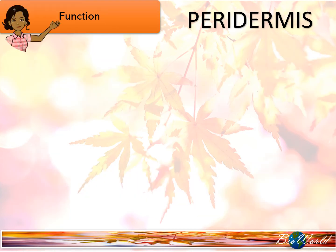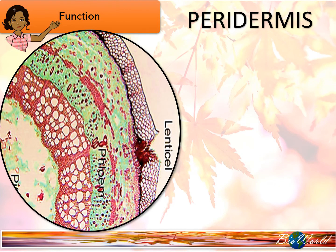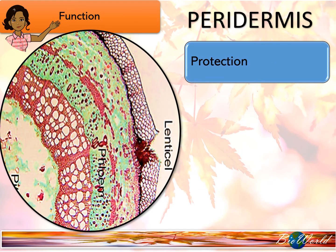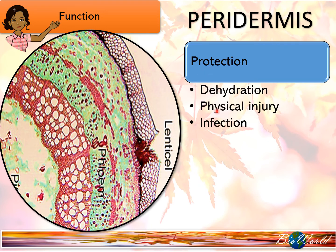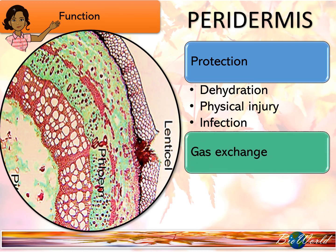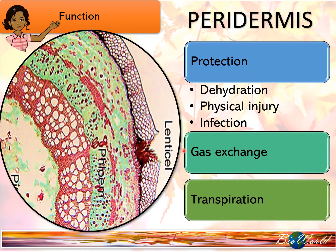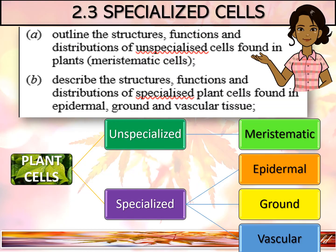Now we will look at the function of the peridermis. The main function is to protect the plant. The dead cork cells are able to protect the plant from dehydration, physical injury, and infection. At the lenticel, where the cork cells are loosely arranged, the process of gas exchange as well as transpiration can occur.